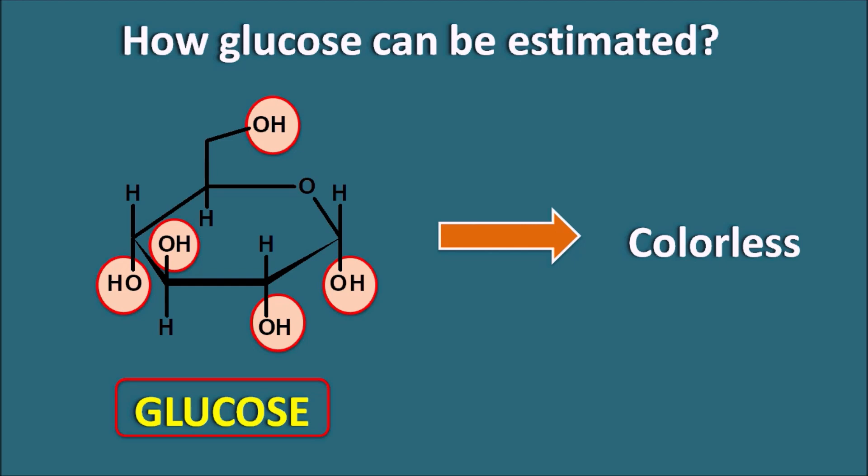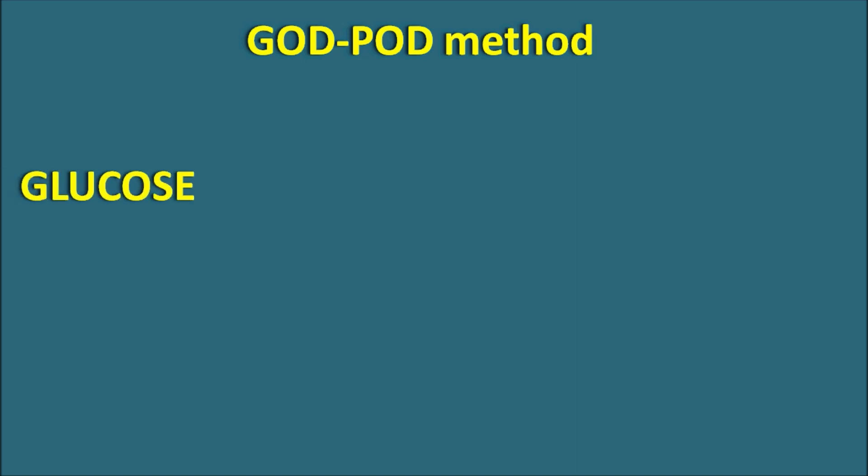Then how can we estimate glucose? One approach is to convert glucose into a colored product so that we can estimate glucose levels within the blood. Many methods exist for estimation of glucose, and today we are going to discuss the GOD-POD method — the glucose oxidase and peroxidase method. Glucose can be estimated indirectly by this method, which involves a two-step process.